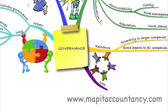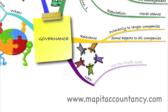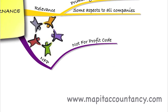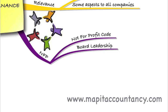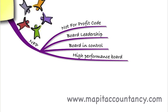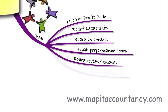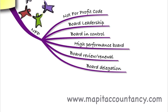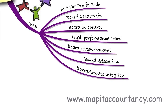We also looked at not-for-profit organisations and noted that governance in these organisations will be slightly different, but still very important. It's set out under the not-for-profit code and covers: board leadership of the organisation; making sure the board is in control of performance; making sure the board performs well; making sure the board does what it's supposed to do, achieving high performance. Also covered are review of the board and board renewal, and board delegation to senior management within the charity or not-for-profit organisation.